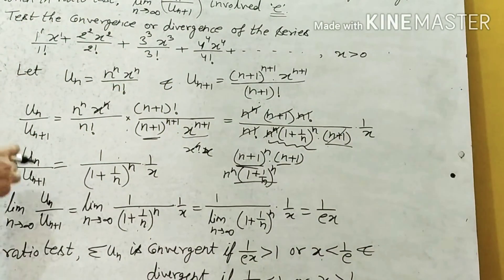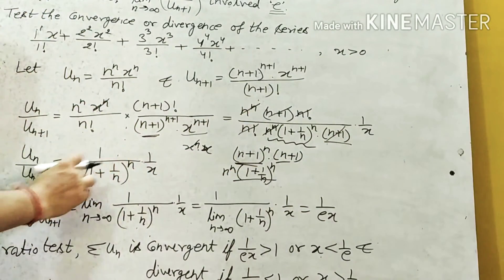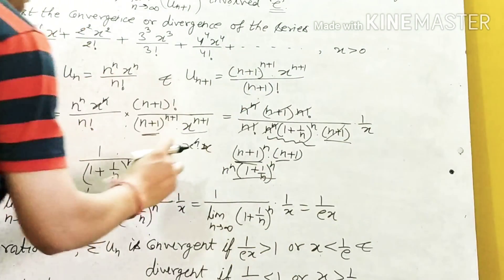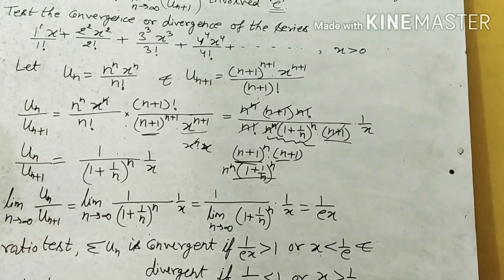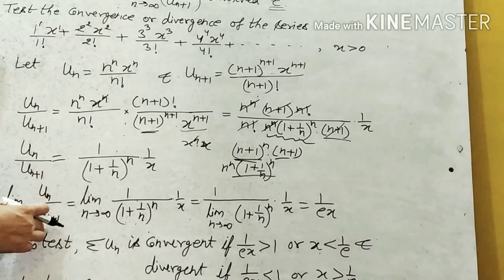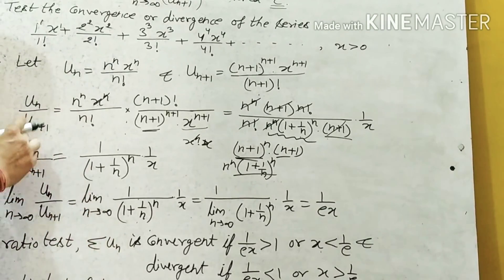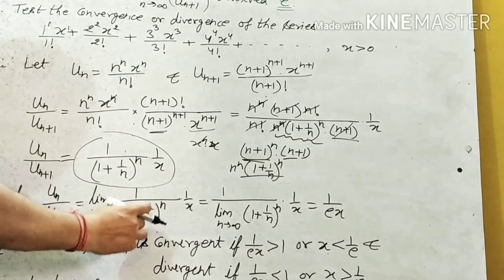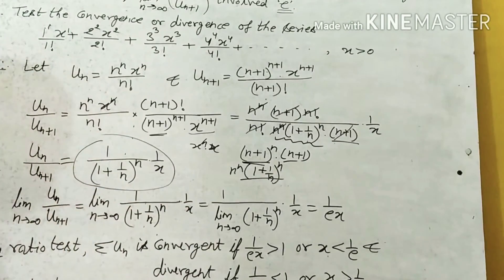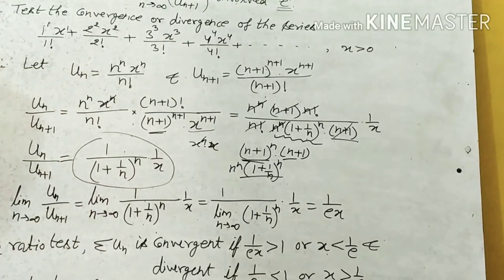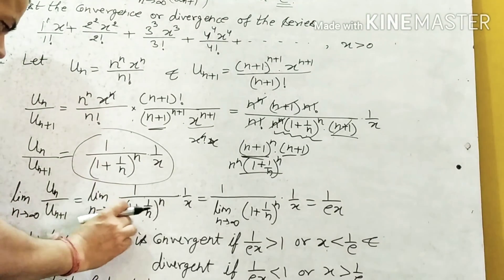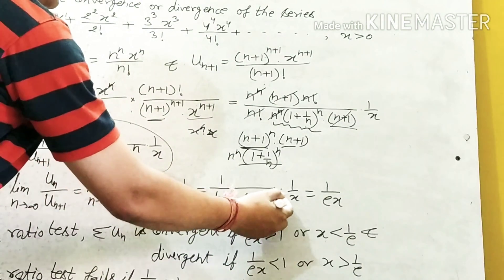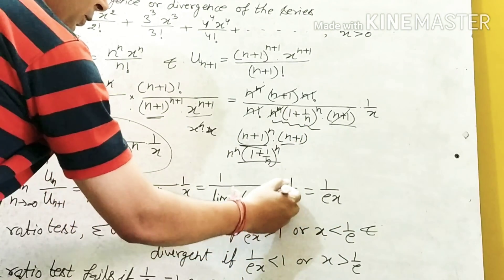After cancellation — n! with n!, n^n with n^n, and (n+1) with (n+1) — we get un / un+1 = 1 / [(1 + 1/n)^n] · (1/x). Now applying the ratio test: limit n→∞ of un/un+1 = 1 / [limit n→∞ of (1 + 1/n)^n] · (1/x). Since limit of (1 + 1/n)^n = e, the result is 1/(e) · (1/x) — wait, it simplifies to 1/(ex) ... actually = (1/x) · (1/e) = 1/(ex). But as stated, the limit equals 1/x using the formula for e, giving limit = 1/(ex).